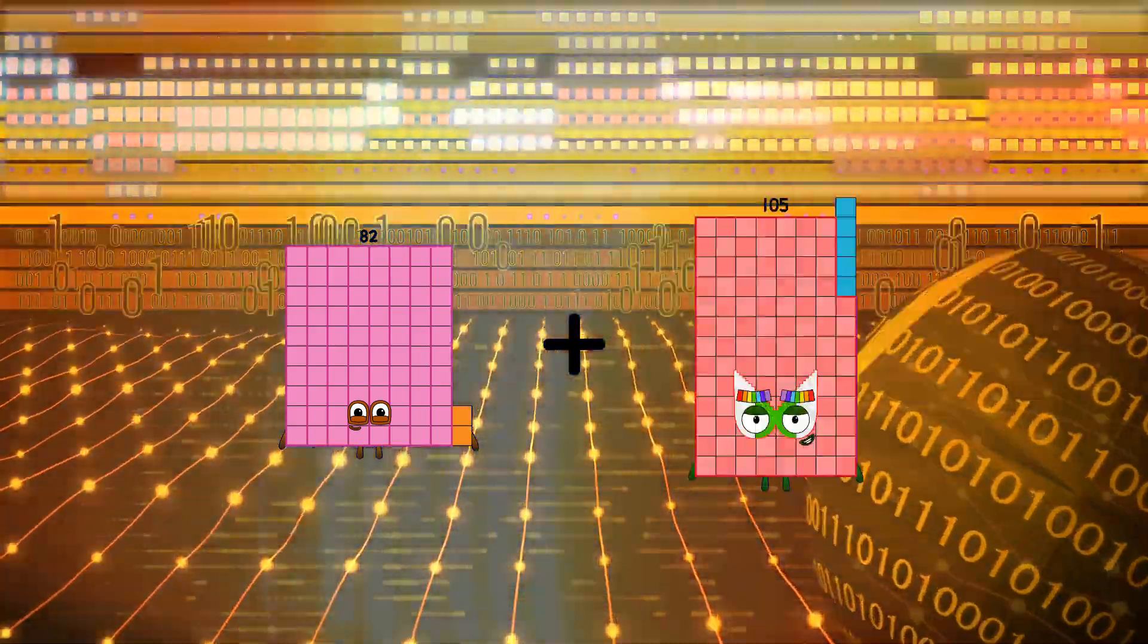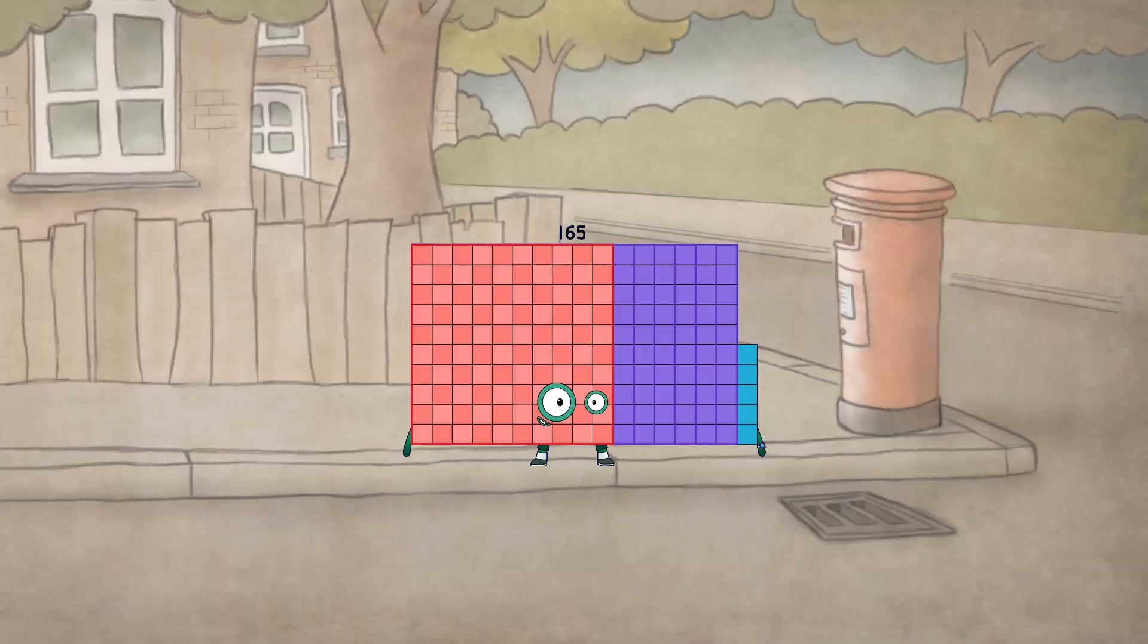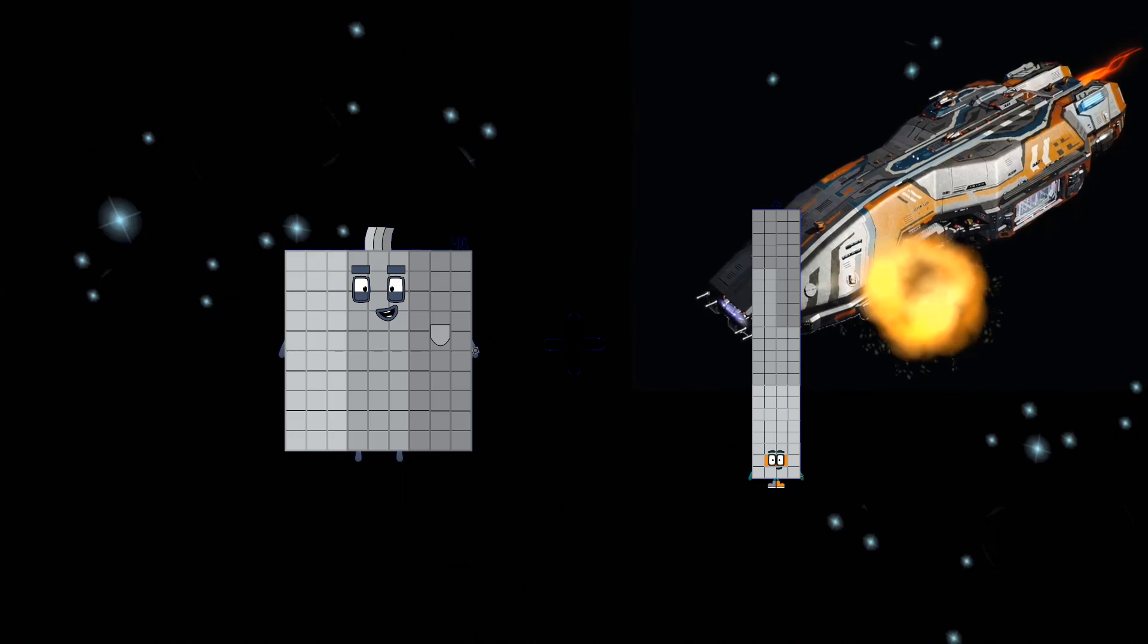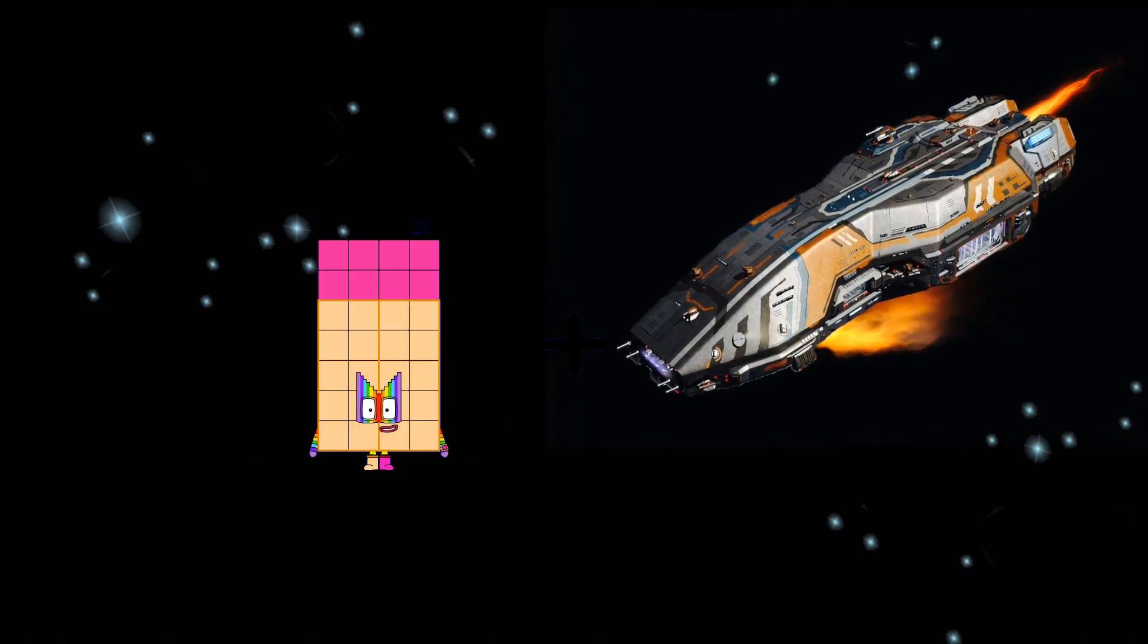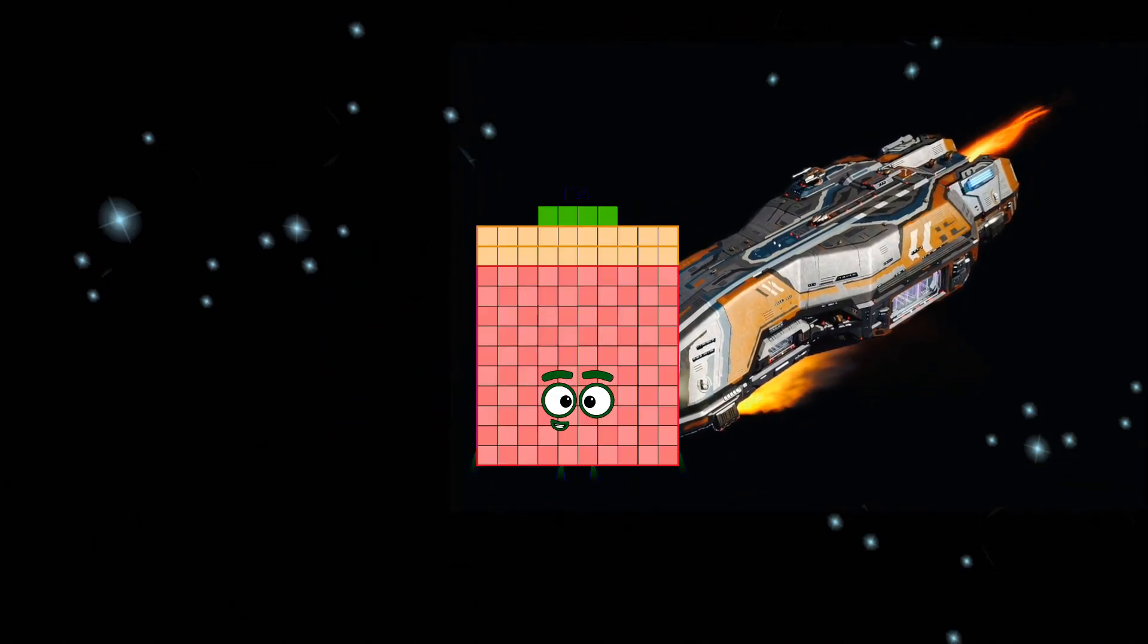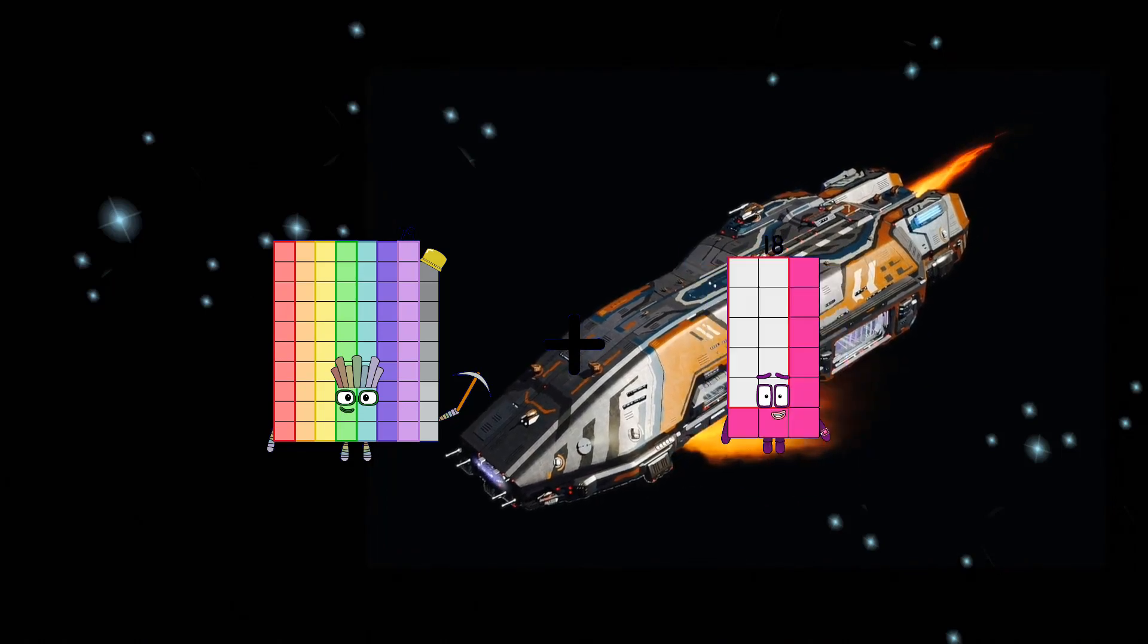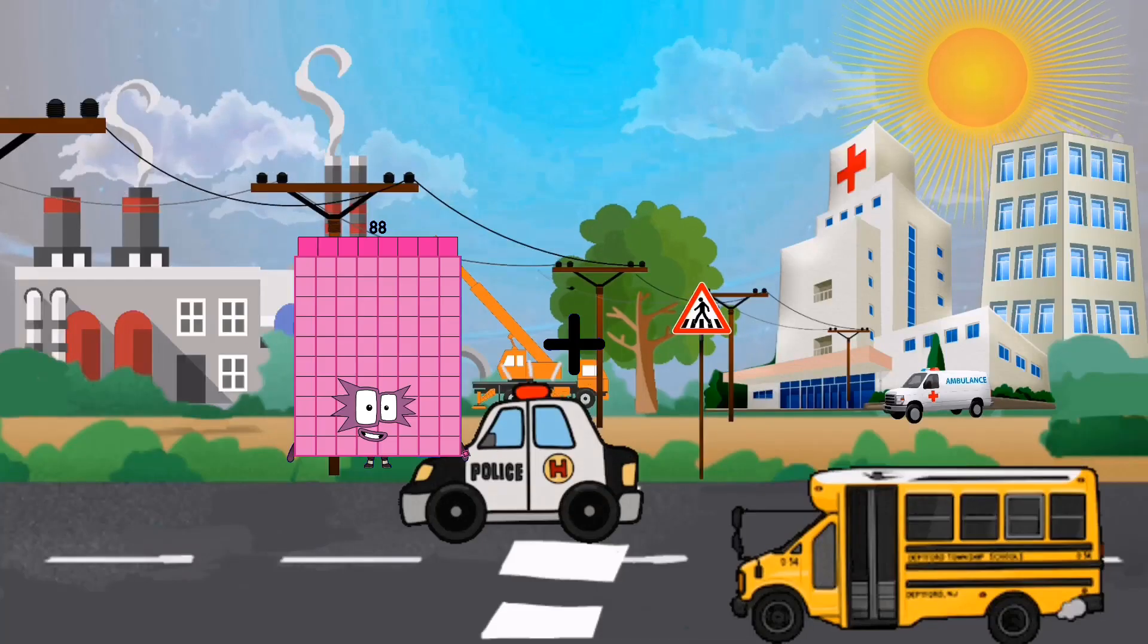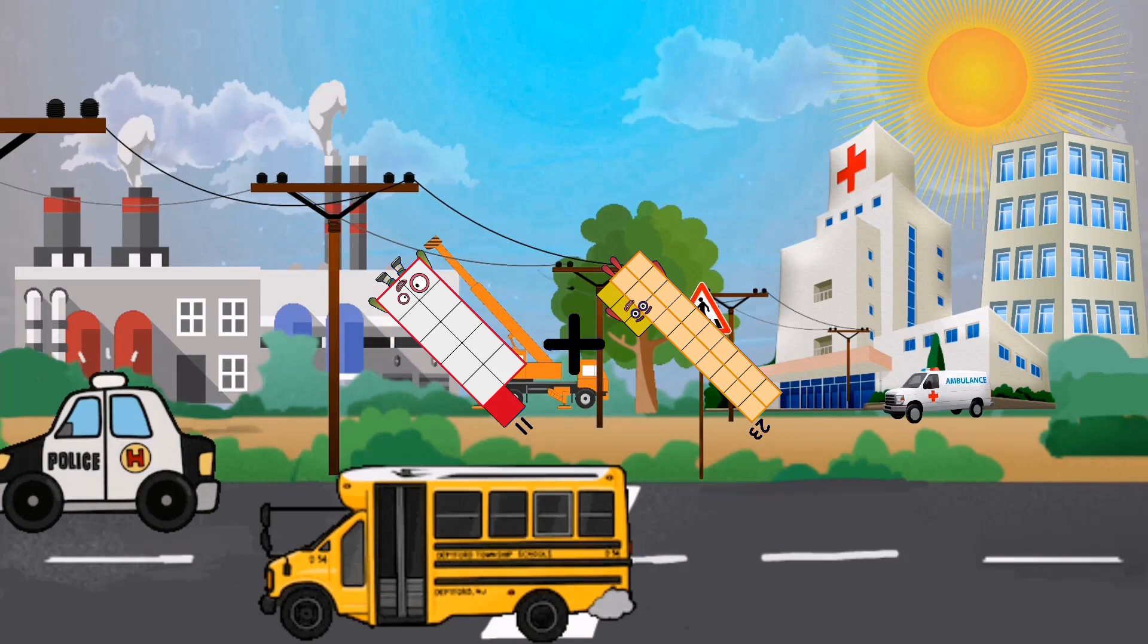82 plus 83 equals 165, 90 plus 92 equals 182, 32 plus 92 equals 124, 79 plus 29 equals 108, 11 plus 23 equals 34.